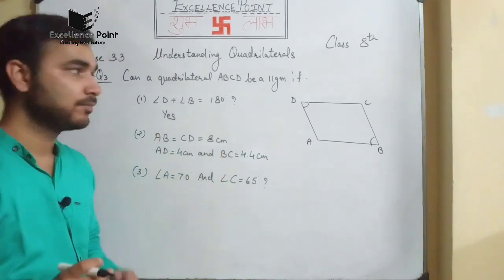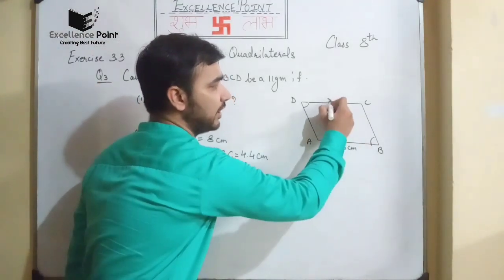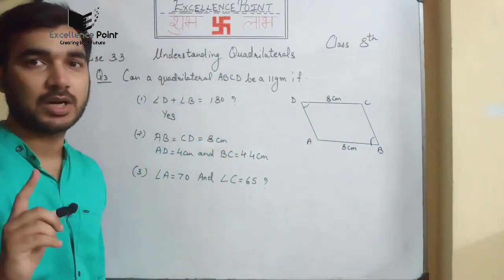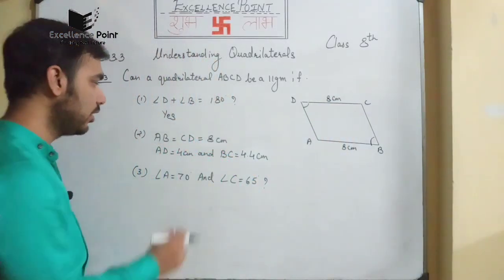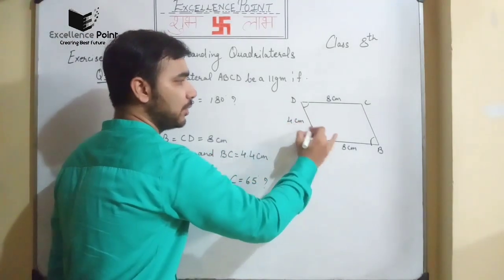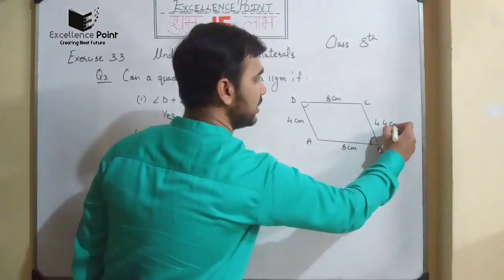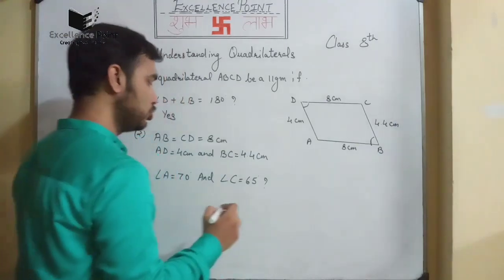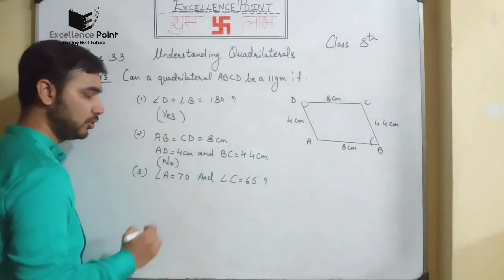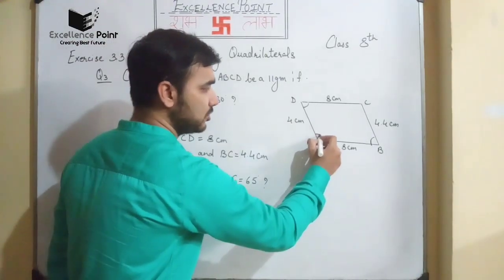Similarly: AB is equal to CD equals 8 centimeters — opposite sides of a parallelogram are equal, so this is correct. Now AD is equal to BC: AD is 4 centimeters which is correct, but BC here is 4.4 centimeters which is incorrect, so the answer for this will be no.